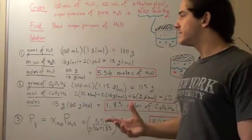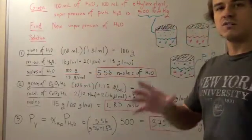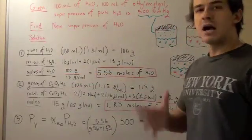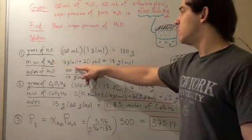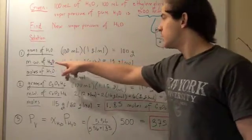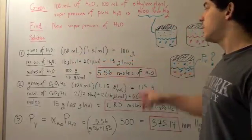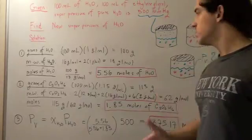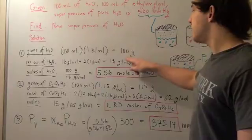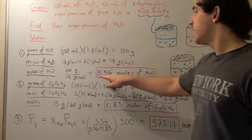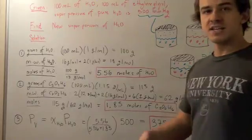Now we have to find the molecular weight of water. To find the molecular weight, we simply add up the atomic weights. Oxygen is 16 g/mol plus 2 times 1 g/mol gives us 18 g/mol. So the molecular weight of water is 18 g/mol. Finally, we take 100 grams and divide it by 18 g/mol, and we get 5.56 moles of water.